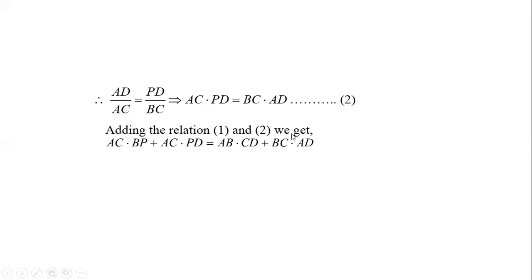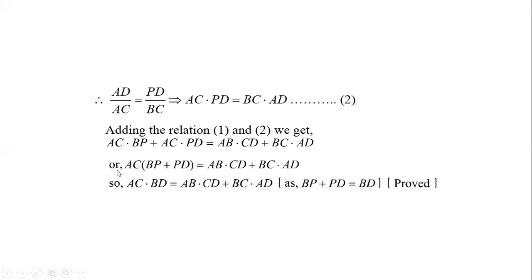Adding equations 1 and 2, we get AC · BP + AC · PD = AB · CD + BC · AD. Taking AC common: AC(BP + PD) = AB · CD + BC · AD. Since BP + PD equals BD, we get AC · BD = AB · CD + BC · AD. Hence the theorem is proved.